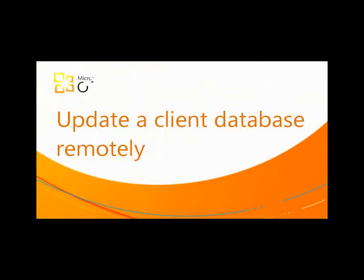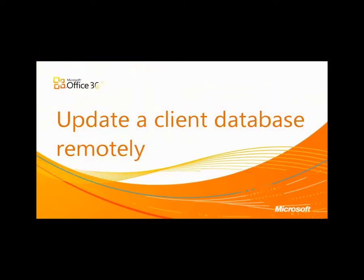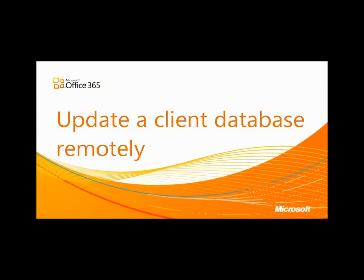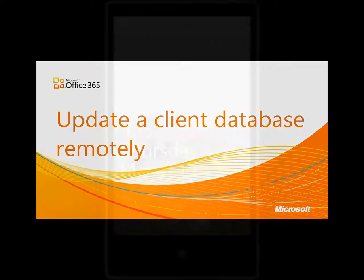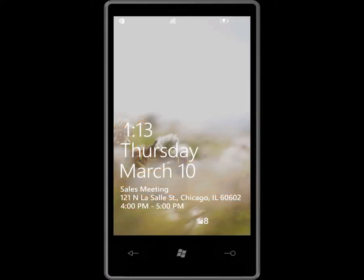I just got off the plane and I'm on my way to a sales meeting. The first thing I need to do is check my calendar with my Windows Phone 7, which is synced up with my Outlook calendar at work, to make sure I've got the details for the meeting.